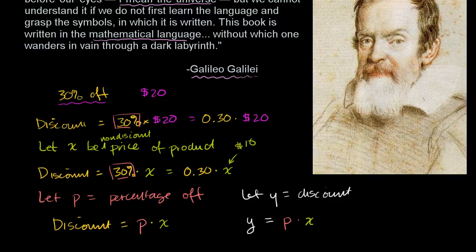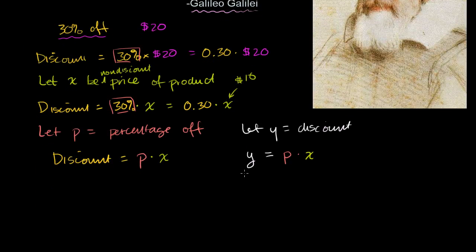But now things get really interesting because we can use this type of a relationship, which is an equation. You're equating Y to this right over here. That's why we call it an equation. This can be used for things that are completely unrelated to the discount price at the store. You might have, so in physics, you'll see that force is equal to mass times acceleration.